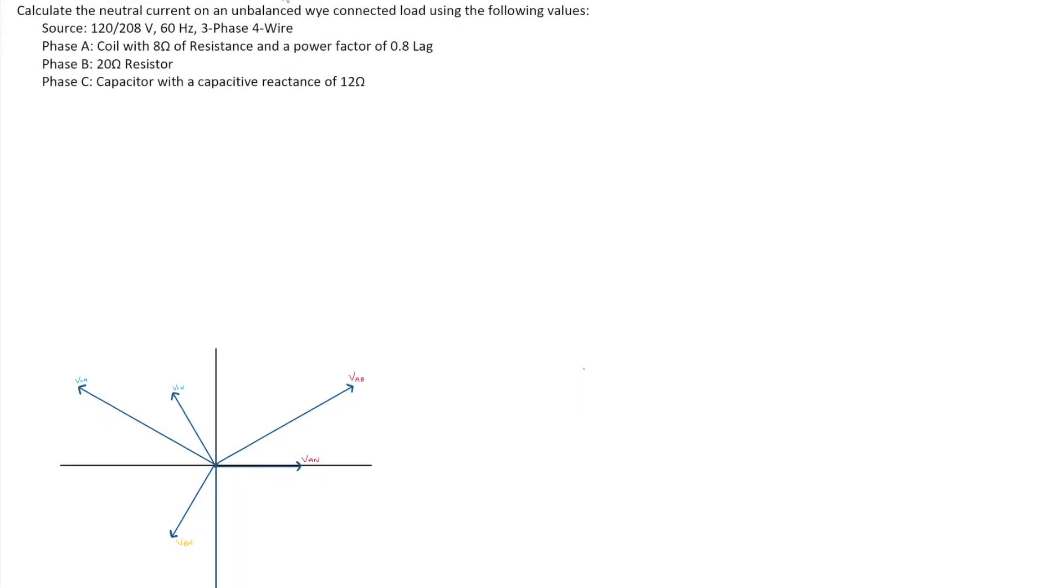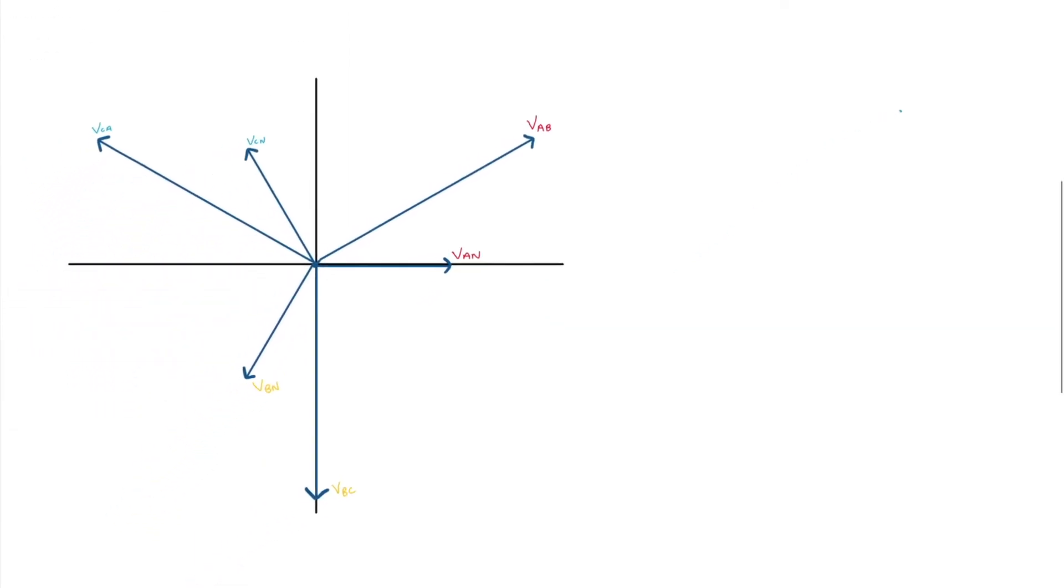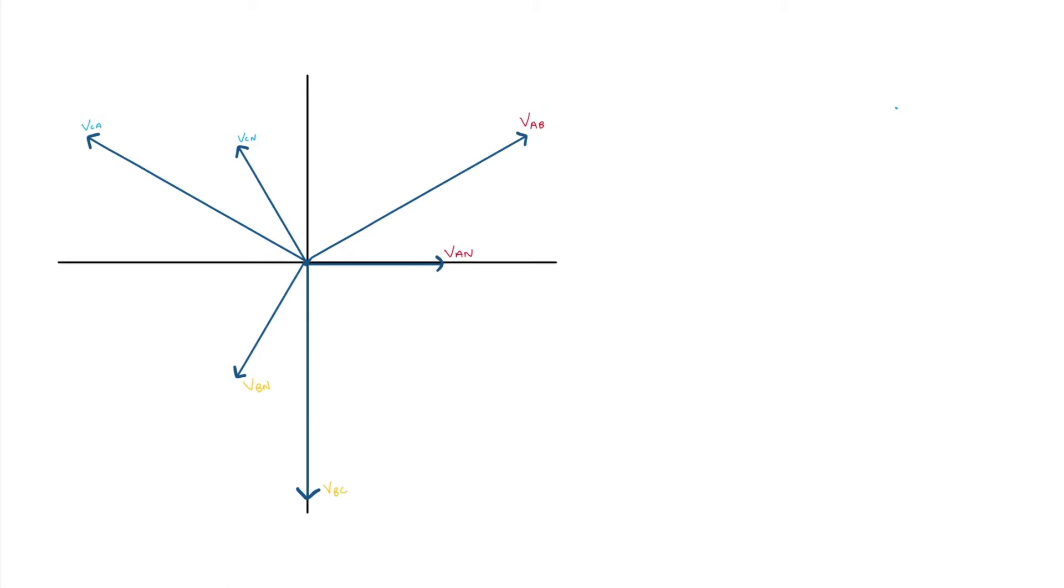So what I've got down in the bottom left is we've already got a phasor diagram. So here I've got my phase voltages and my line voltages already plotted out. That's from my source. I got VAN as my reference at zero degrees. My line voltage is leading by 30 degrees.